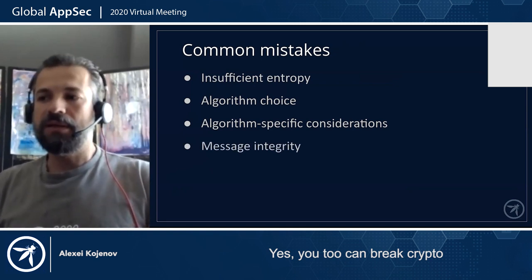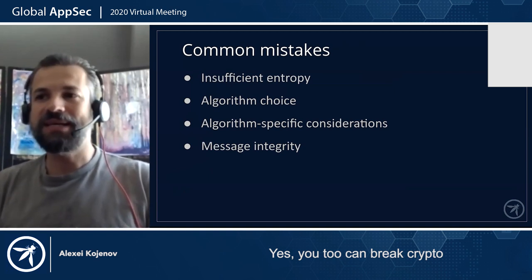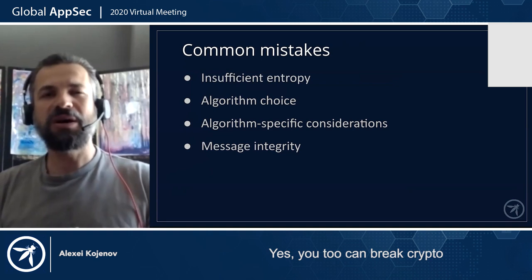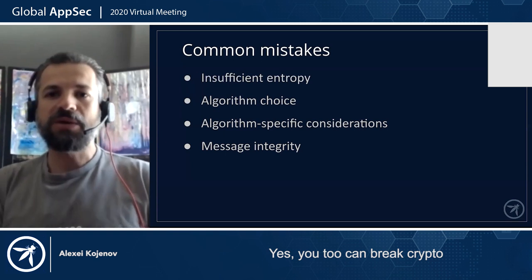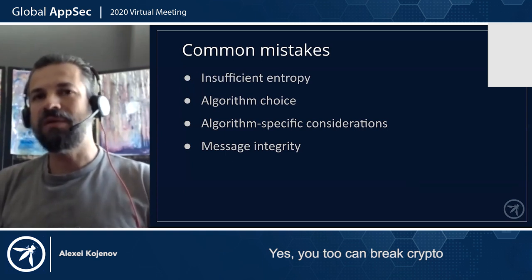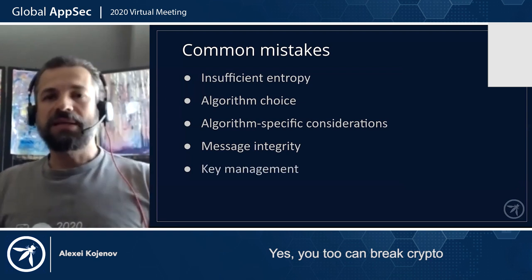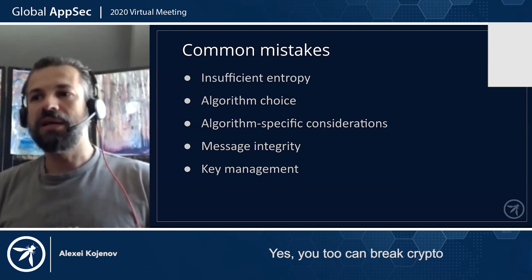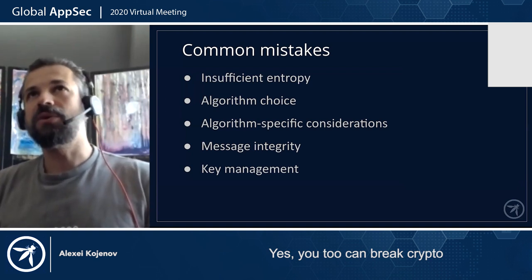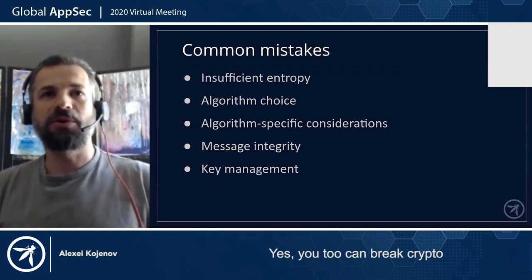Number four is often overlooked: we tend to focus on confidentiality — we don't want anybody to read the data — but we often forget about integrity. Is the message trustworthy? We encrypted it, but can somebody modify it in ways we don't want? Integrity is really, really important. And the last but not least is key management. You can do everything right, but if you don't manage the keys correctly and your keys get leaked, cracked, or obtained some other way, your whole scheme is broken.